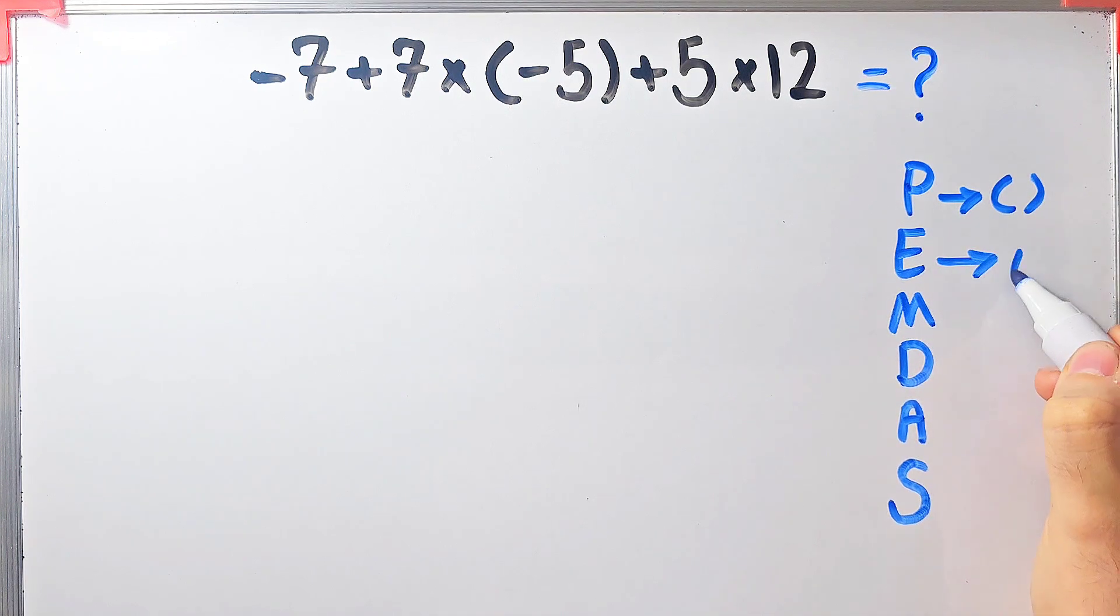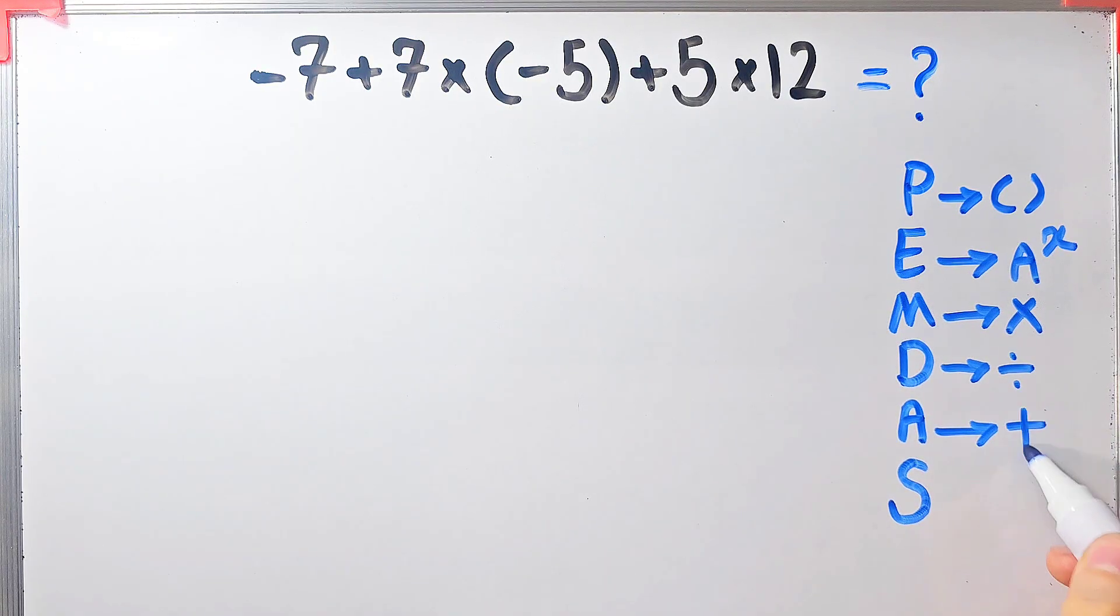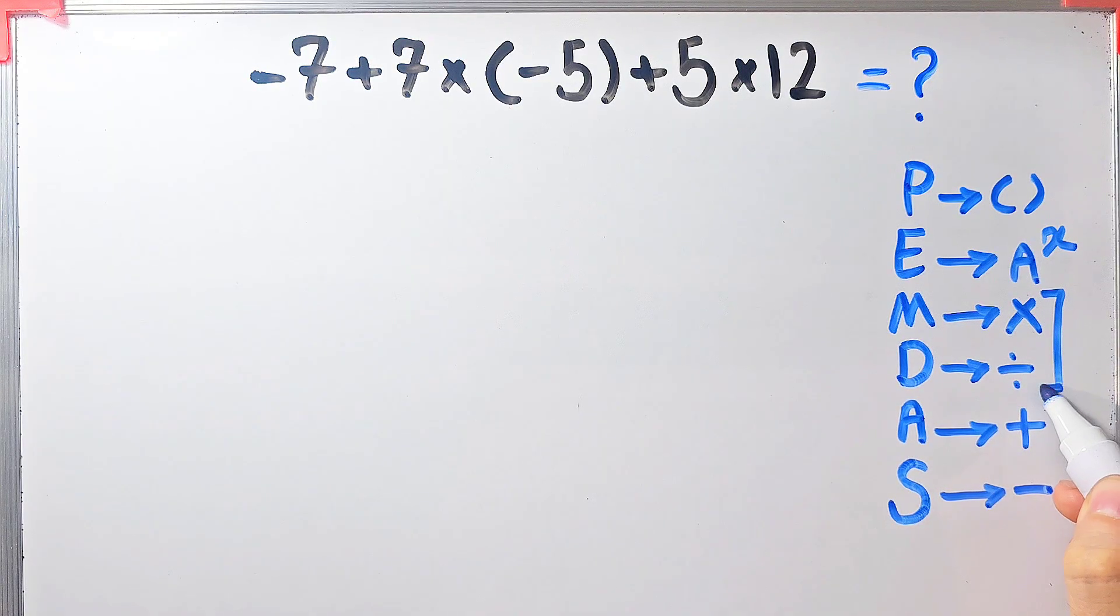E stands for exponent, M stands for multiplication, D stands for division, A stands for addition, and S stands for subtraction. Multiplication and division have the same level of priority. Also, addition and subtraction have the same level of priority. When we have both in an expression, we start from the left and simplify.